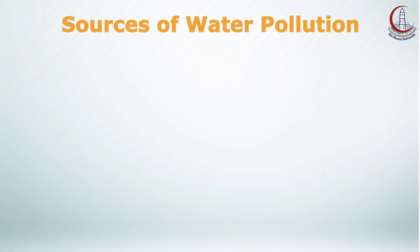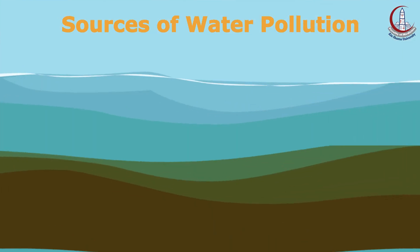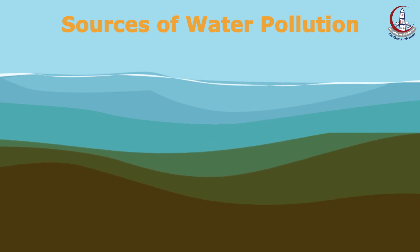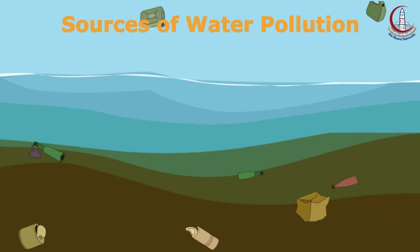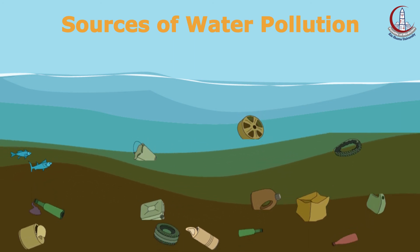Another source of water pollution is ocean and marine dumping. In some countries, paper waste, food waste, plastic, rubber, metallic, and aluminium waste are disposed of into the sea, thus harming sea animals and causing a lot of deaths.